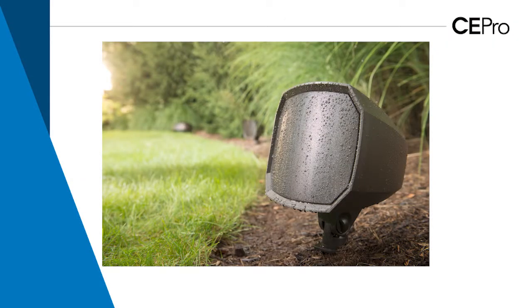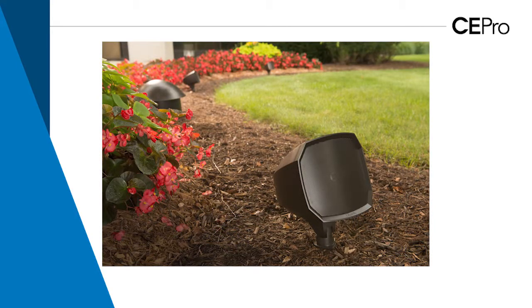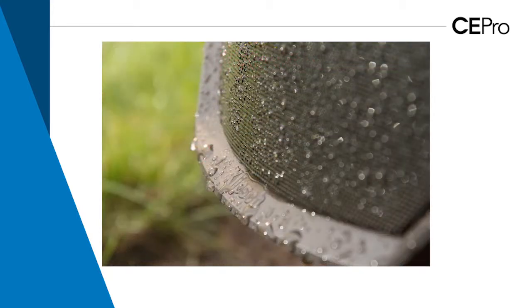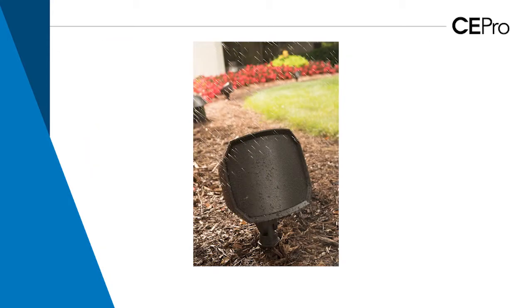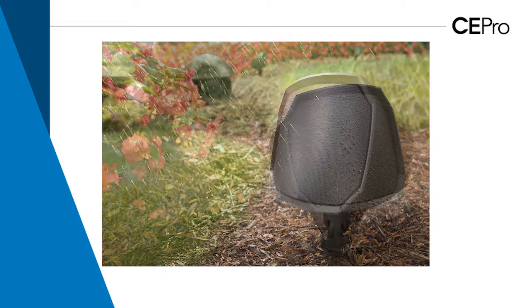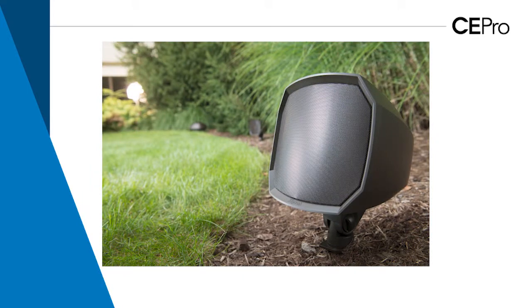The Tractrix horn that Klipsch products have used for over 70 years — we have long touted the benefits of controlled dispersion, focusing the sound at the listening area. With our outdoor products, we've actually started to design horns with a much wider dispersion, 90 degrees and above. Our new landscape system uses a 105-degree dispersion pattern, same with our new rock speakers in our pro series. You still get the benefits of the horn — more dynamic, more efficient, more detailed sound — but you're not dealing with such a focused sound that you get holes or gaps in the dispersion.